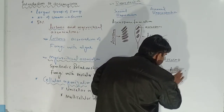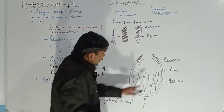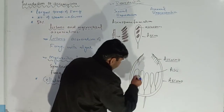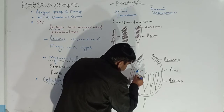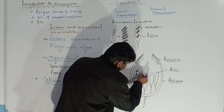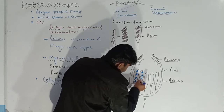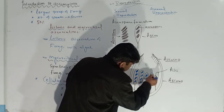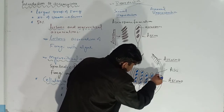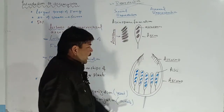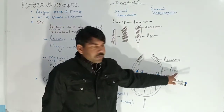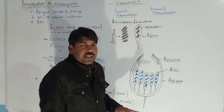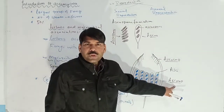Inside the asci, which are tube-like structures, the spores are produced and these spores are known as ascospores. These ascospores are produced in tube-like structures called asci — singular: ascus — and the whole structure in which the asci are produced is known as the ascocarp.